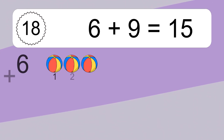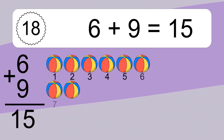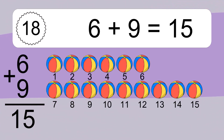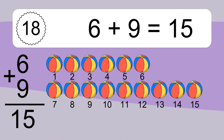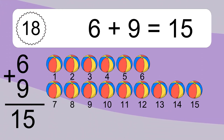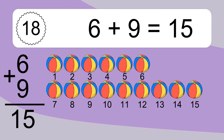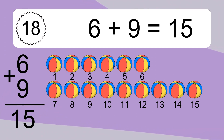6 plus 9 equals what? 6 plus 9 equals 15. Let's count it: 1, 2, 3, 4, 5, 6, 7, 8, 9, 10, 11, 12, 13, 14, 15.